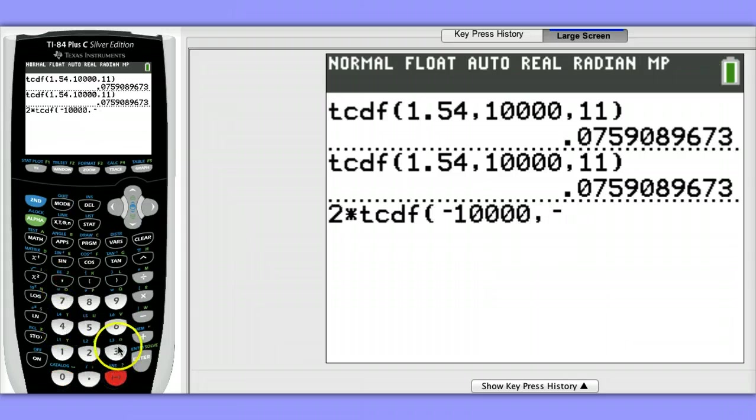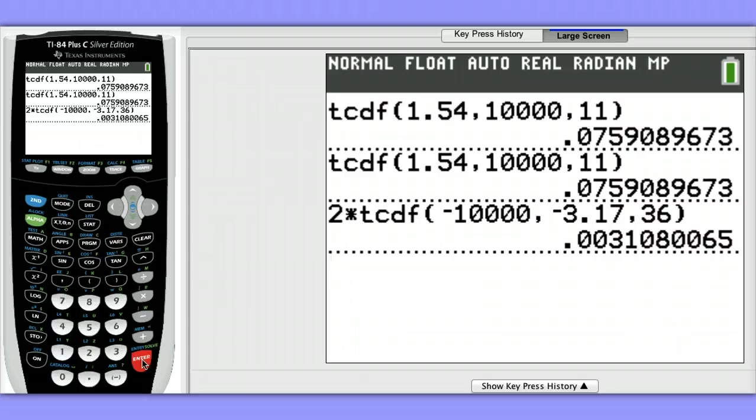Then we have negative 3.17, and our degrees of freedom is 36. Once again, if I had the stat wizard turned on in my operating system 2.55, I would have had a dialog box pop up where I could just enter the values and not have to remember the syntax.